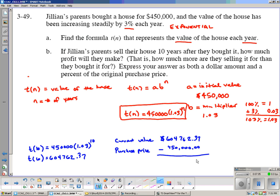Let's go ahead and calculate. $60 minus $45 is $15. So it's looking like the amount of money they made on this deal would have been $154,762.37. Not too bad. This is the amount of profit that they made.